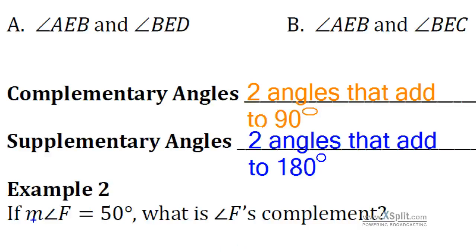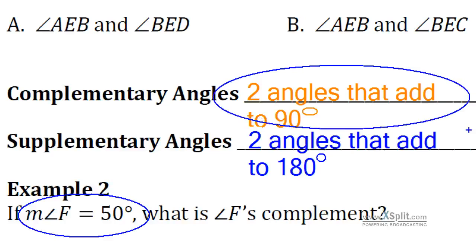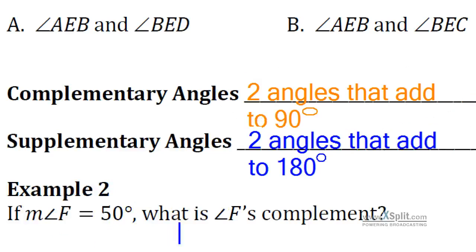For example, if we have an angle F that's 50 degrees, what is F's complement? Well, we need something that with this 50 degrees is going to add to 90, right? If it's complementary. So what with 50 adds to 90? 40. We'd say that the measure of the complement is 40 degrees.